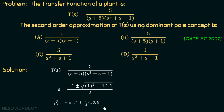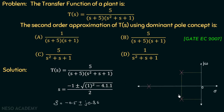We have now calculated all three poles of this transfer function. There is one pair of complex conjugate poles at s = −0.5 ± j0.86, and the other pole is at s = −5. Plotting these in the pole-zero diagram, the complex conjugate poles are located at real part −0.5 with imaginary parts ±j0.86, and the third pole is at −5.